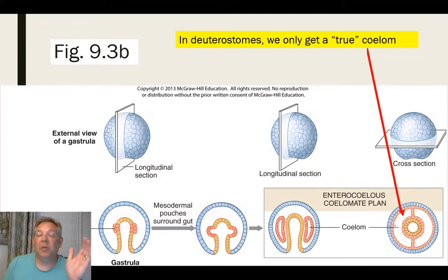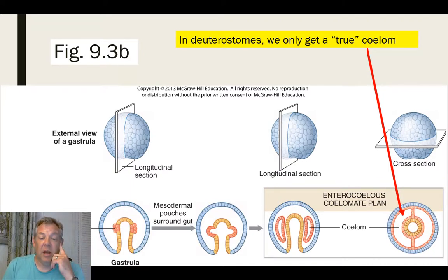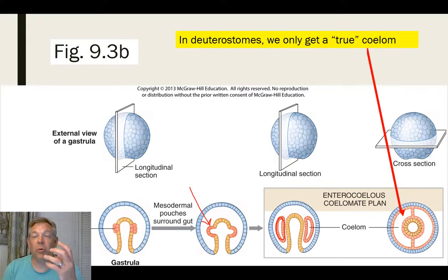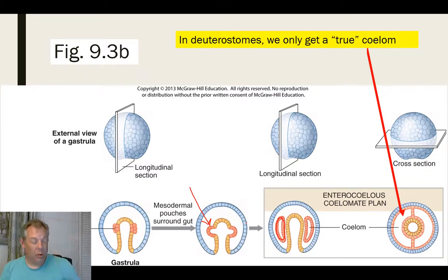In the deuterostomes, we always just get the true coelom. Here you can see the mesoderm starting and forming in a different spot than in the protostomes. When it forms, it loops around on itself and forms a cavity within the mesoderm — that's a true coelom. And that's the only way you get a coelom in deuterostomes.